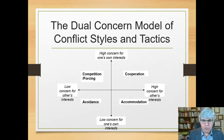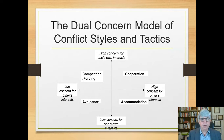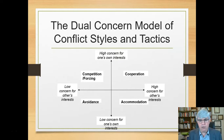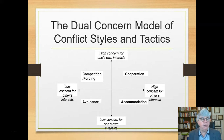On the horizontal axis, we have high concern for others' interests and low concern for others' interests — how concerned I am for the interests and concerns of the other person. That can be high or low. Over on the right side is a high concern for others' interests; over on the left side is a low concern for others' interests.